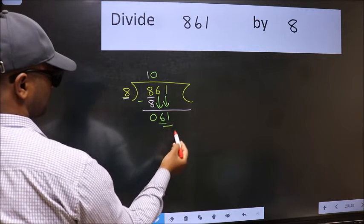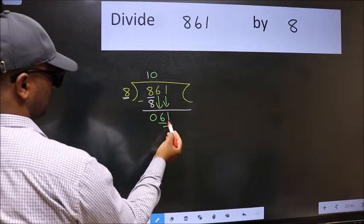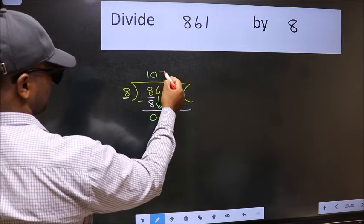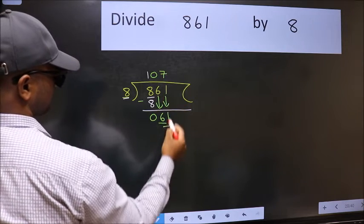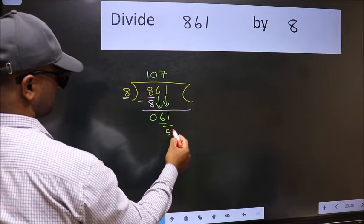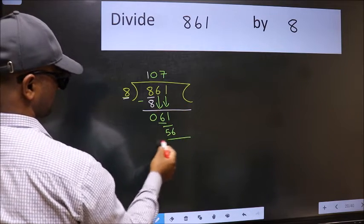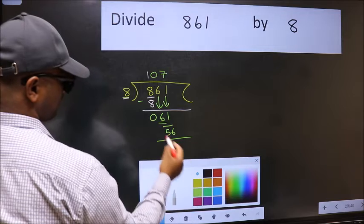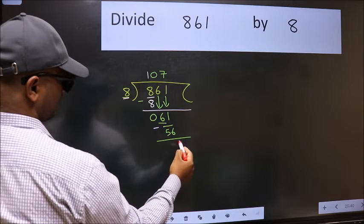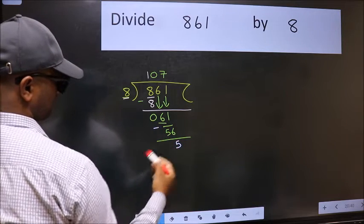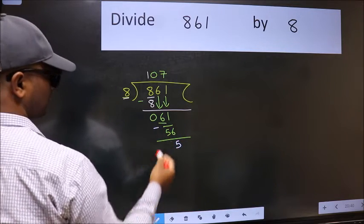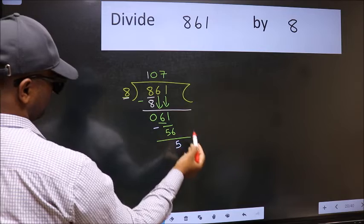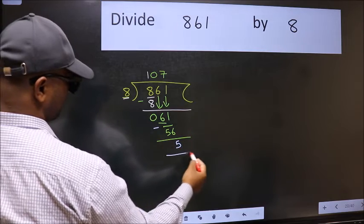Now, 61. A number close to 61 in the 8 table is 8 times 7 is 56. Now we should subtract. We get 5. No more numbers to bring down, so we stop here.